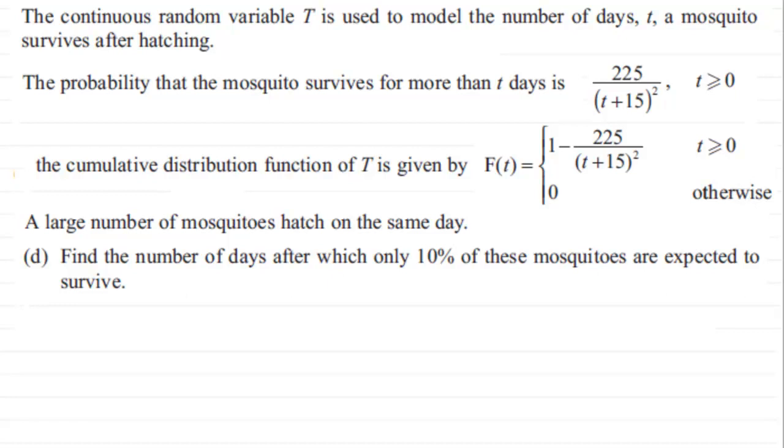As usual, I'll work through the solution for you. Okay, welcome back if you had a go. So find the number of days after which only 10% of these mosquitoes are expected to survive. Well, we're looking at the probability that our random variable T being greater than some number of days has got to equal 10%, 0.10, or just simply 1/10.